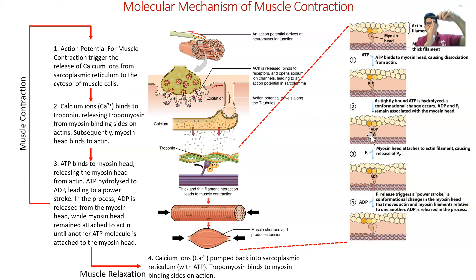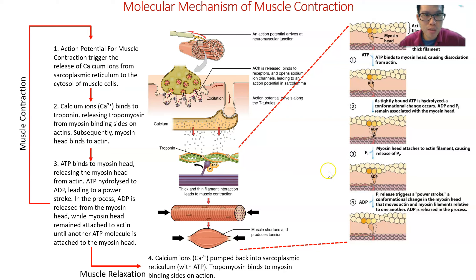Once ADP is removed from the myosin head, it releases and binds back to the next myosin binding site on the actin, producing another power stroke. This cycle — ATP binds, myosin head releases from actin, ATP hydrolyzes to ADP, power stroke, ADP removed, myosin head rebinds — repeats continuously during muscle contraction.